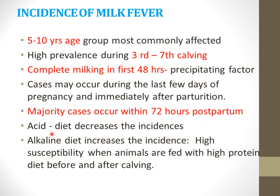Diet also plays a role in incidence. An acidic diet decreases the incidence because it makes calcium more soluble and easier to absorb. An alkaline diet, generally associated with high protein diet before and after calving, makes calcium insoluble, making absorption difficult and thus increasing the incidence of milk fever.